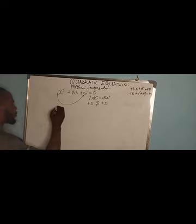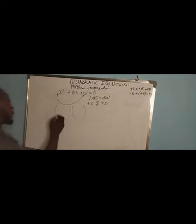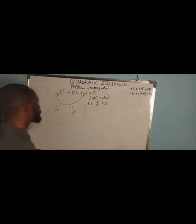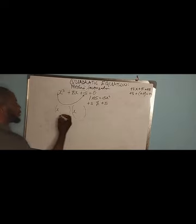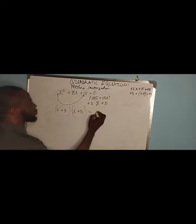Then what you have to do next is open two brackets. Put x here and put another x here, then bring down the two factors with their signs: (x + 3)(x + 5) = 0.